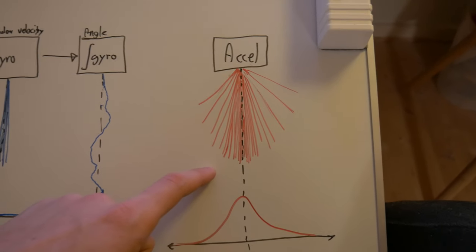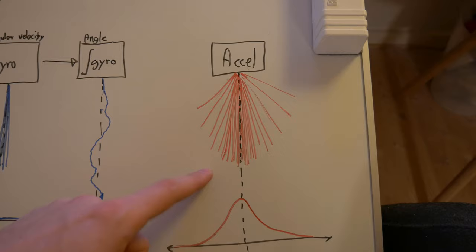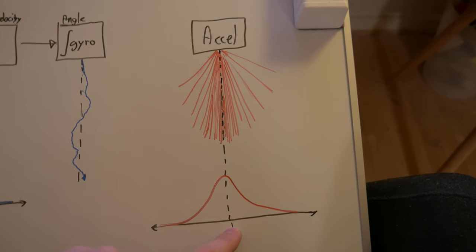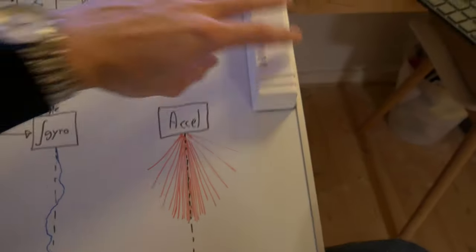For the accelerometer, since we are measuring the gravity vector, it's going to be always centered around zero. If you have some object being moved around in some random way,